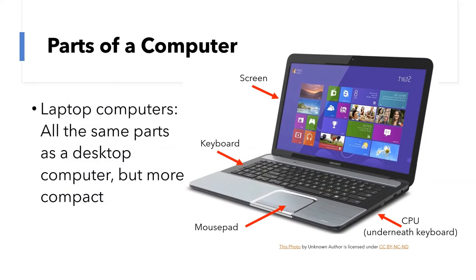A laptop actually has all of those same components as a desktop computer. It has a screen just like a desktop computer, a keyboard, a mouse pad instead of a mouse — but it works in pretty much the same way. And it also has a CPU. It's just that it's tucked underneath that keyboard, very small and compact, so you're not usually looking at it when you're looking at a laptop, and it folds up into a small space. So a laptop computer has all of those same components, just much more compact.